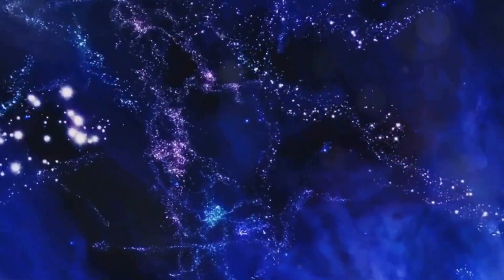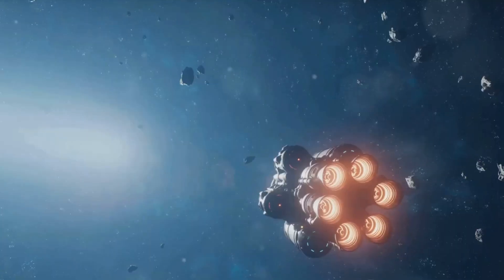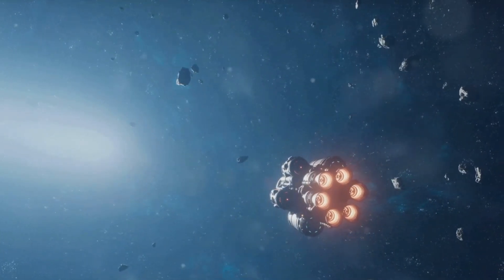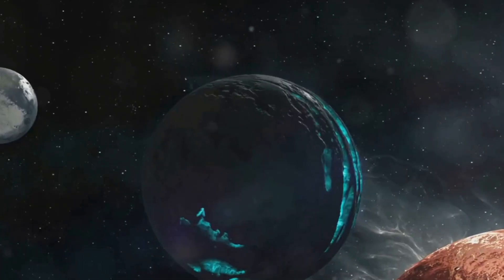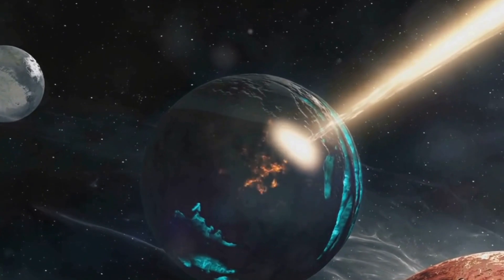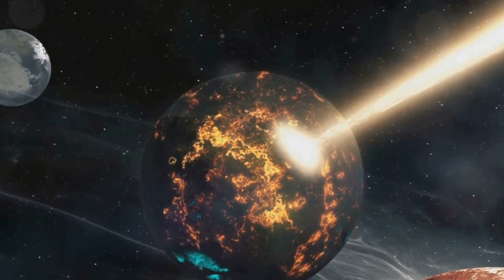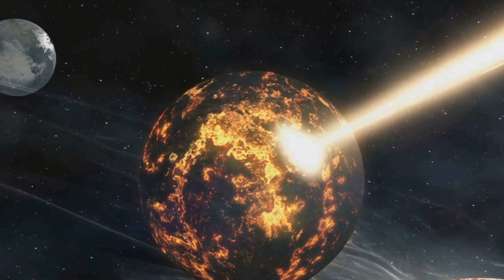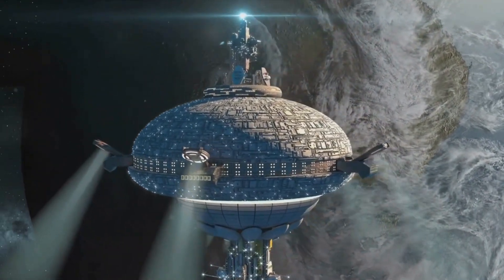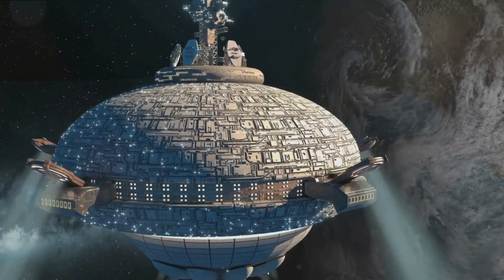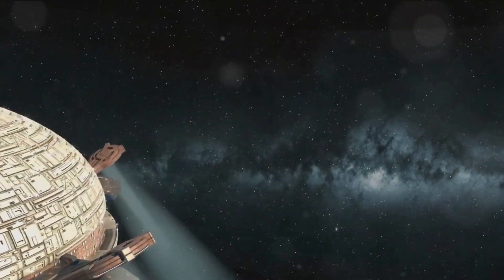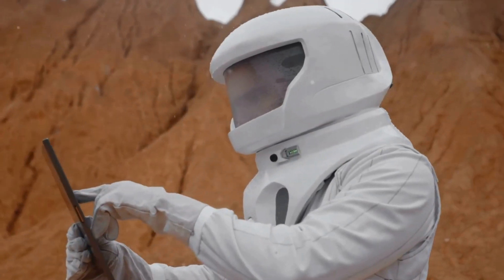Now hold on to your hats because we're about to take another quantum leap. Picture a Type 7 civilization. This is a civilization that has transcended dimensions with the ability to manipulate time and even create universes. It's as though they've unlocked the cheat codes to the universe, bending it to their will. But let's pause for a moment. These concepts are purely speculative. Even the most brilliant minds can only guess what such civilizations might be like. We're trying to comprehend entities that are as far beyond us as we are beyond an ant. It's a humbling thought, isn't it?